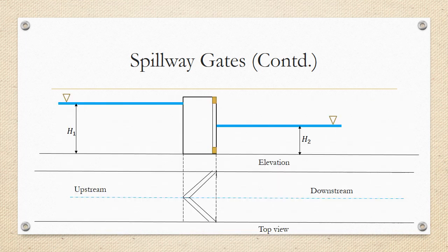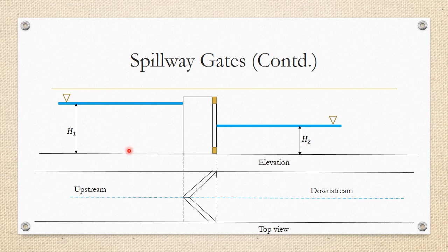This is the plan and elevation of the log gates. Like in the figure, there are two gates bent at an angle — this is the top view (plan) and this is the elevation. In the elevation, only one gate is visible, and on two sides there are two different water levels. H1 is the depth of water on the upstream side and H2 is the depth on the downstream side, with the gates in the locked position.